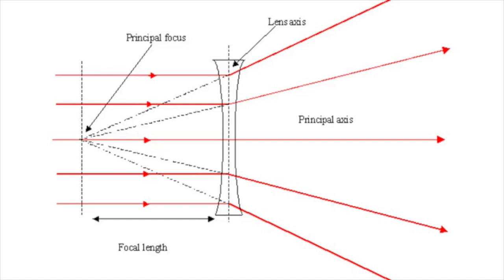On the other hand, a diverging lens, also known as a concave lens, refracts incident light rays coming in parallel to the principal axis so that they diverge in accordance to the focal point right here.